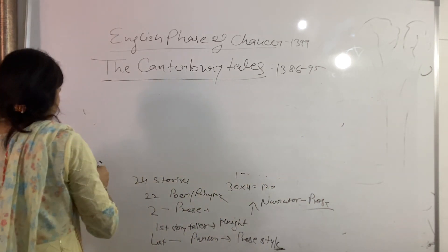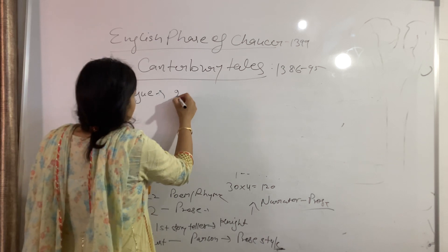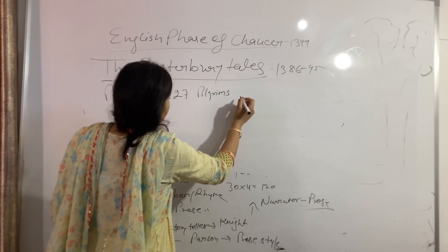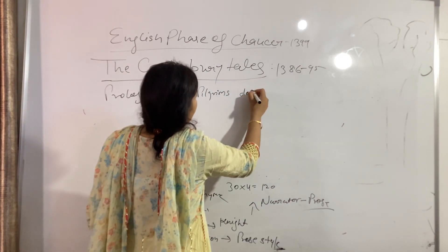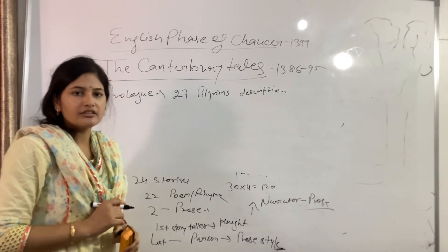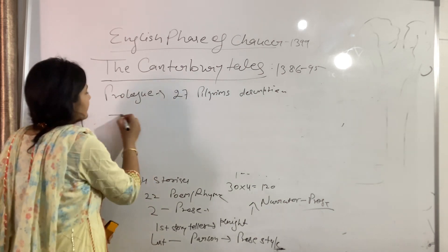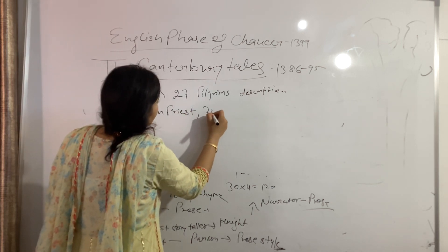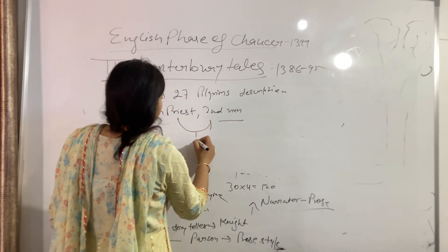Canterbury Tales also has a prologue. In the prologue, 27 pilgrims are described by Chaucer. The total pilgrims are 29, but two pilgrims' descriptions are not given in the prologue. Those two are the Nun's Priest and the Second Nun's Priest.